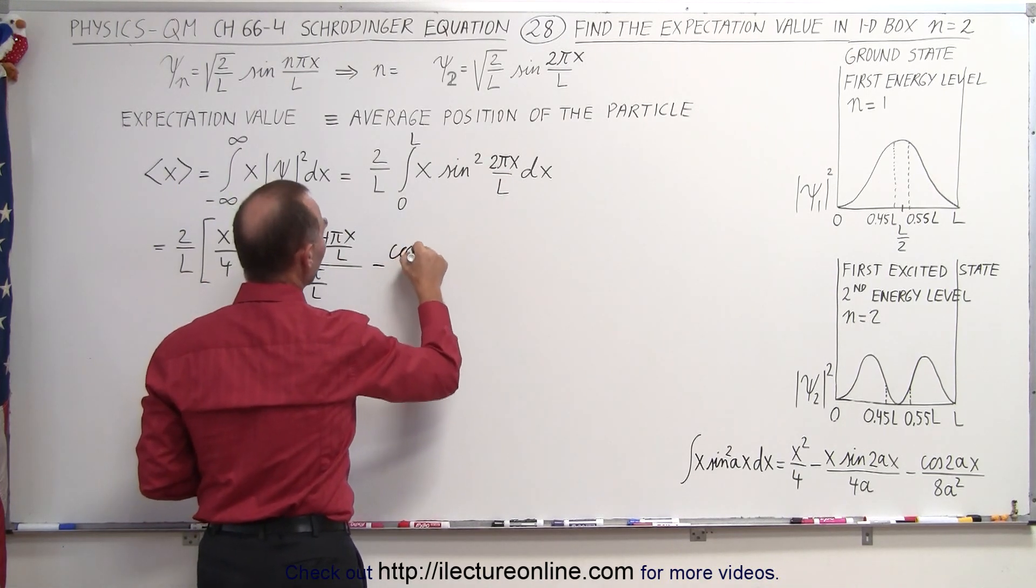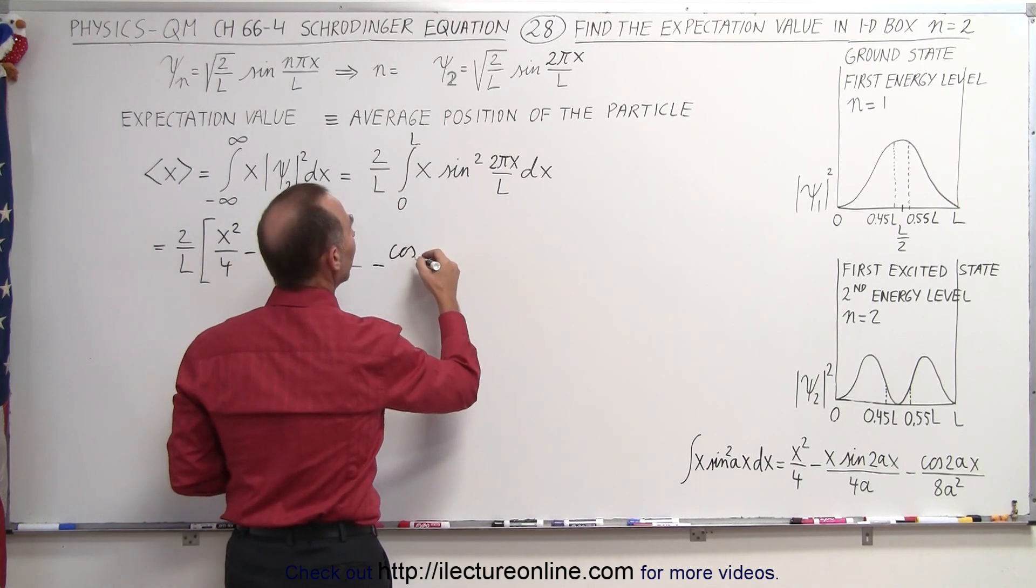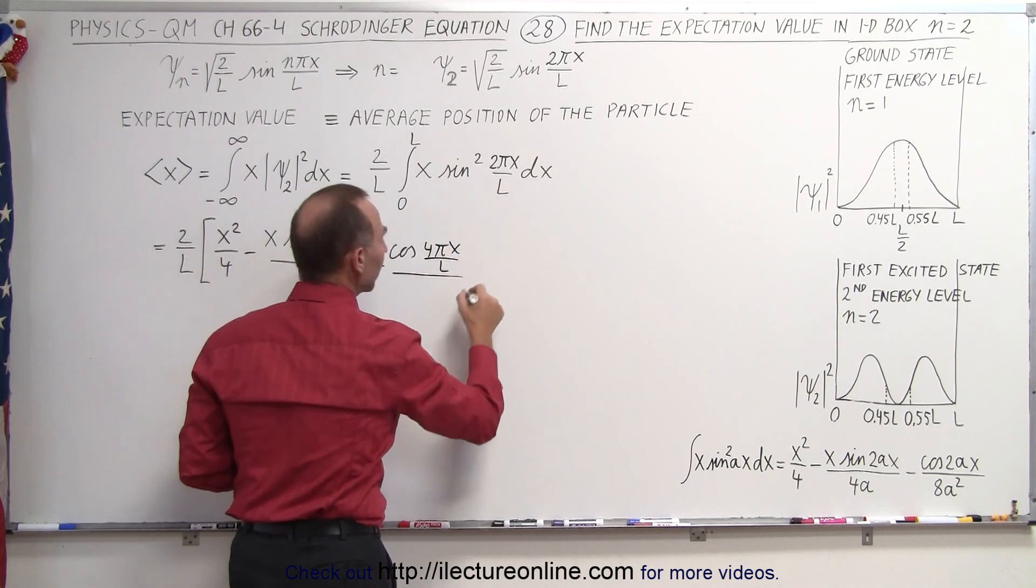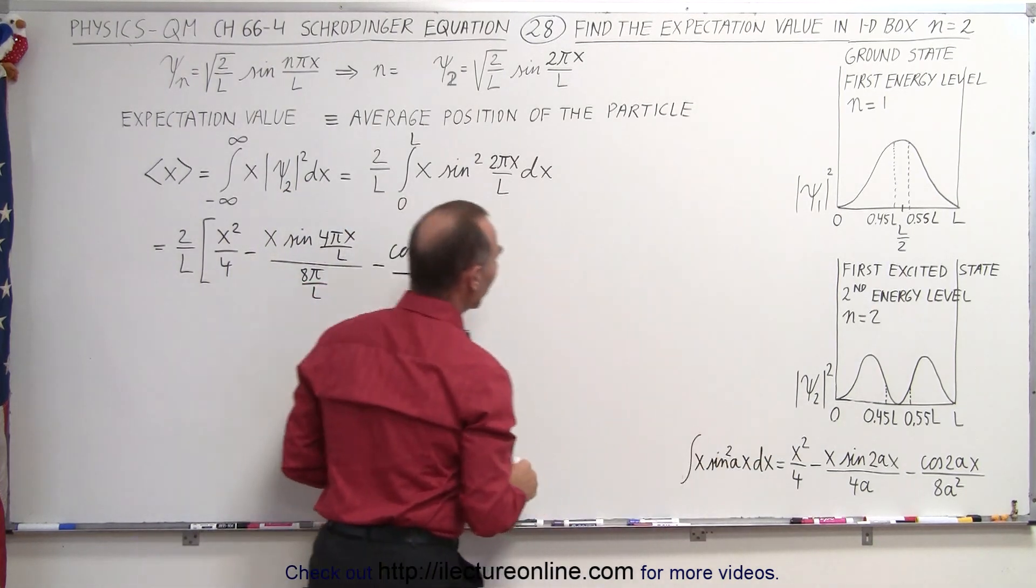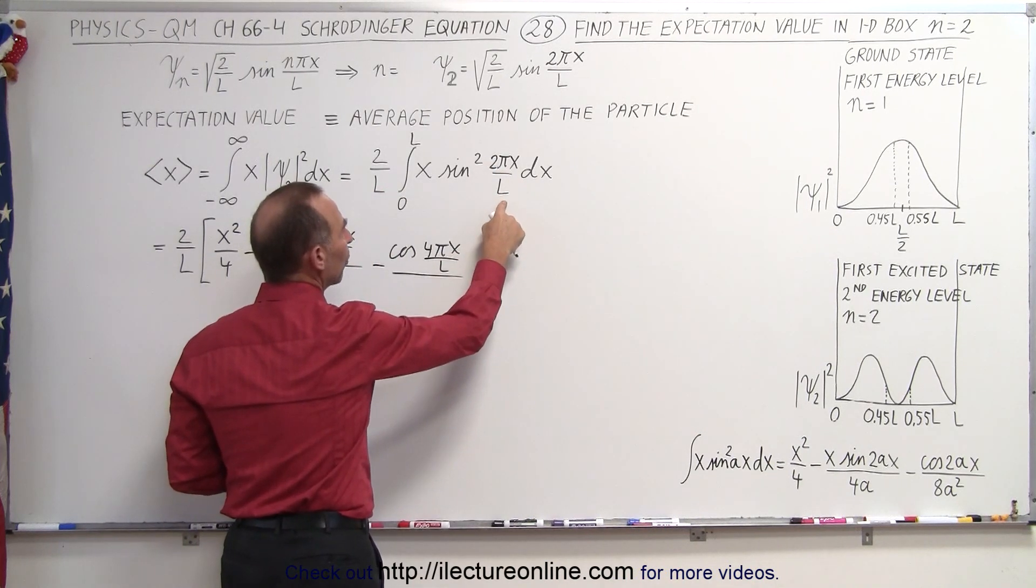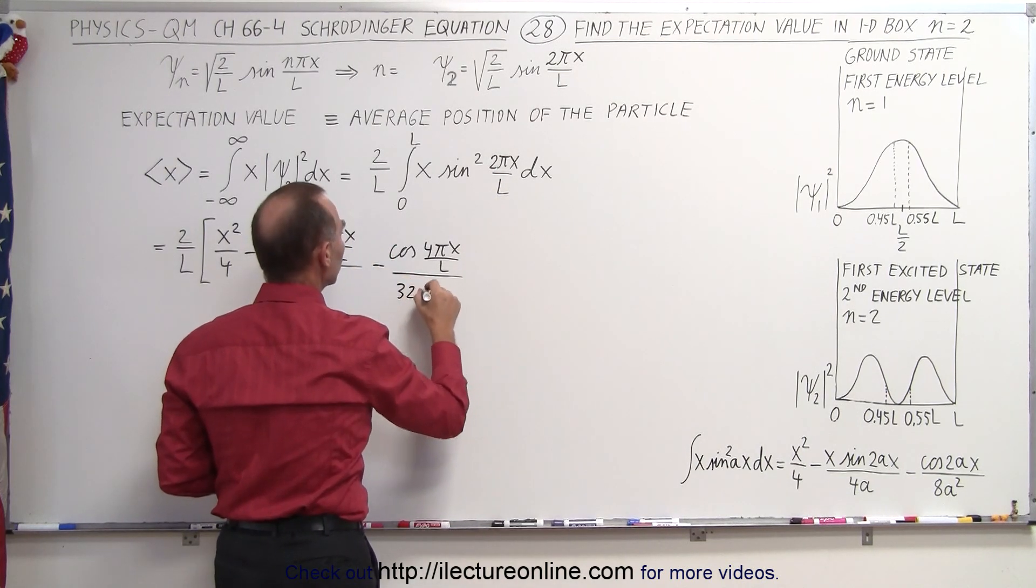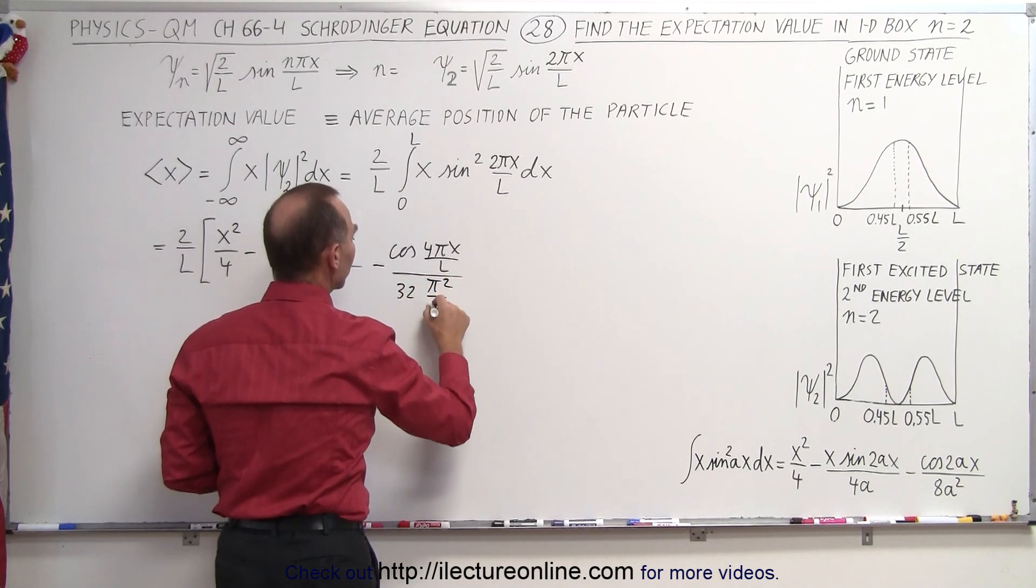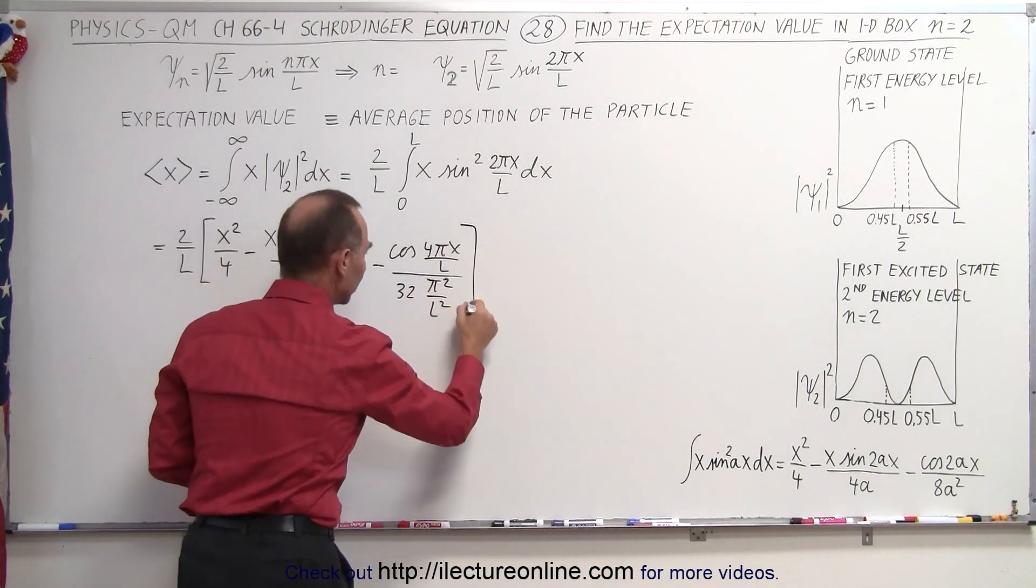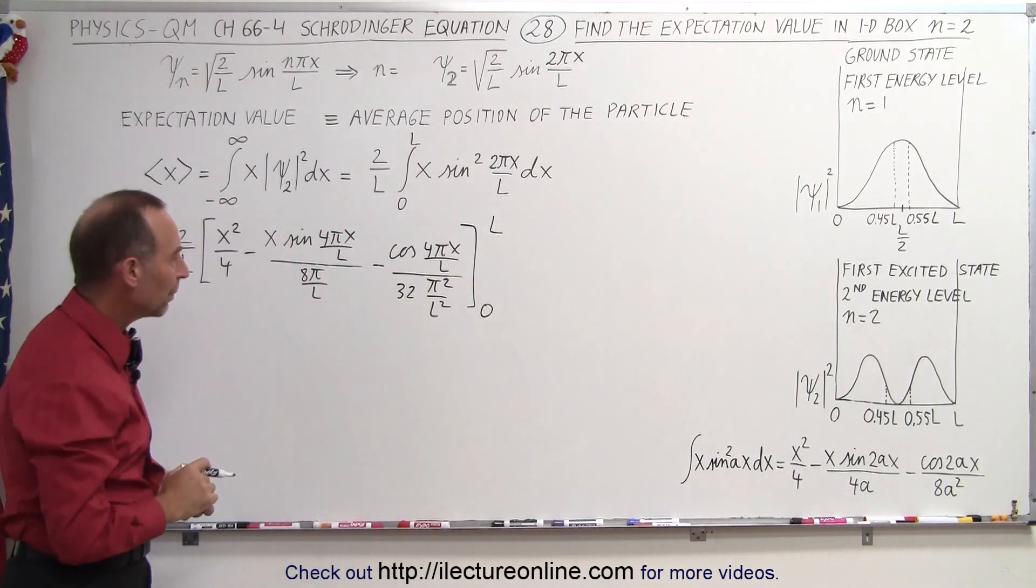Minus the cosine of twice the angle, or 2 times a, so 2 times that would be 4 pi x over l, divided by 8 a squared. Now remember that a was 2 pi over l, so square that—that would be 4 pi squared over l squared times 8, or 32 pi squared over l squared. That's the end of that integral, and we integrate from 0 to l across the whole length of the box.